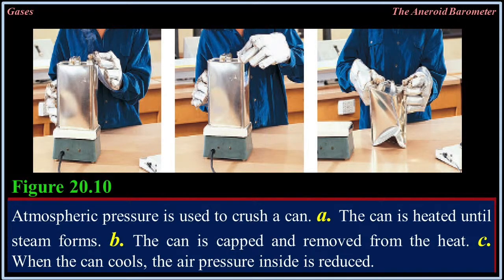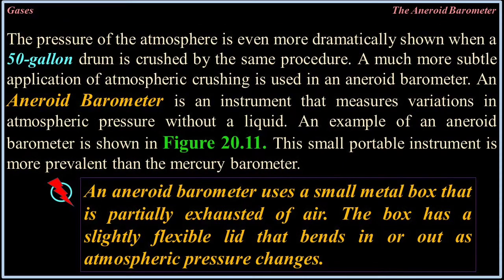Figure 20.10: Atmospheric pressure is used to crush a can. A) The can is heated until steam forms. B) The can is capped and removed from the heat. C) When the can cools, the air pressure inside is reduced. The pressure of the atmosphere is even more dramatically shown when a 50-gallon drum is crushed by the same procedure.